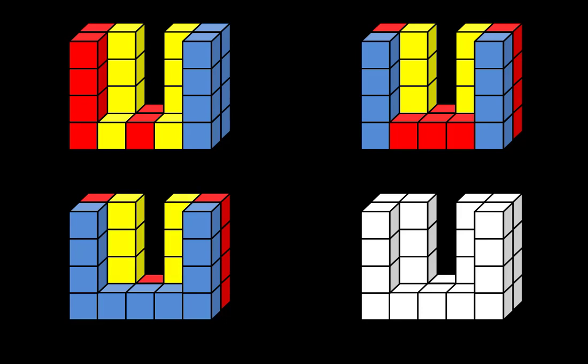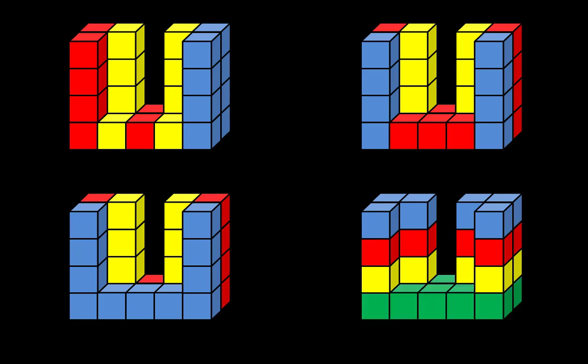Still another approach is to work from the top to the bottom. In the top layer there are six cubes. In the next layer, six cubes. In the next layer, six more cubes. And on the bottom layer, there are 10 cubes. And that is one way to find the total.